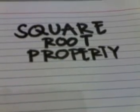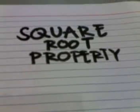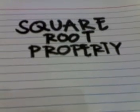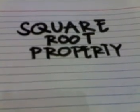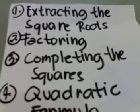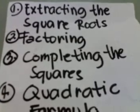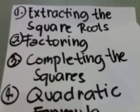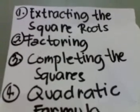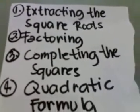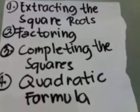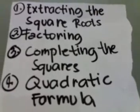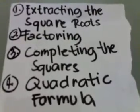We will discuss all about the square root property. This can be done in four different ways, namely: extracting the square roots, factoring, completing the squares, and by using the quadratic formula.